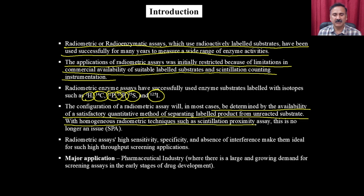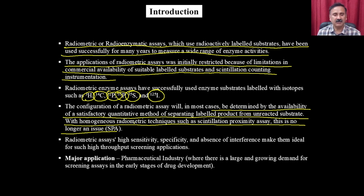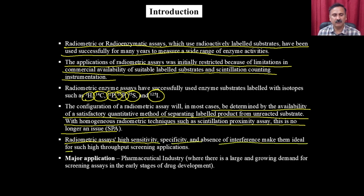The configuration of radiometric assays is in most cases determined by a satisfactory method of separating the labeled product from the unreacted substrate. With homogeneous radiometric techniques such as scintillation proximity assay, this is no longer an issue. Radiometric assays are highly sensitive, specific, and free of interference, making them ideal for high-throughput screening applications in the pharmaceutical industry, where there is a large and growing demand for screening assays in the early stage of development.